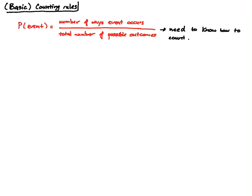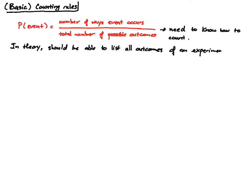You can ask yourself: do I know how to count? If the answer is yes, you can move on — just kidding, it's not as easy as it sounds. In theory, we should be able to list all the outcomes of an experiment and compute the probability of events of interest.